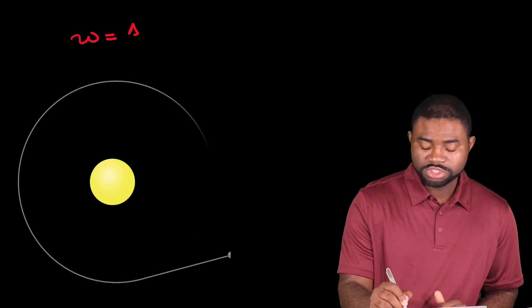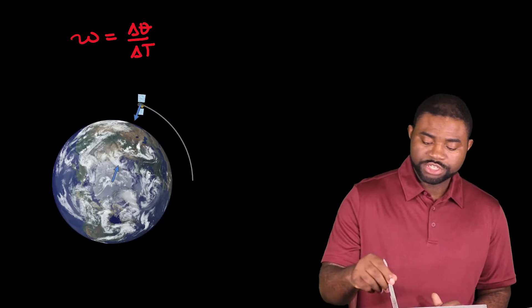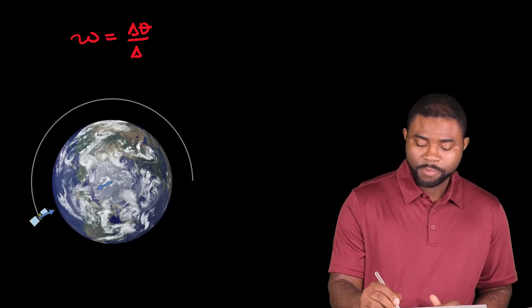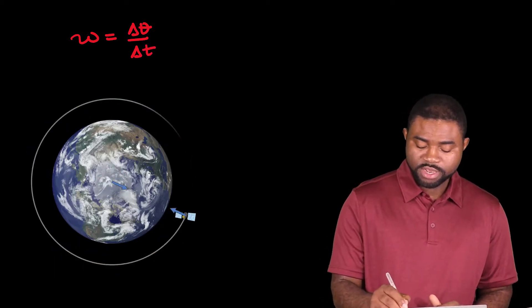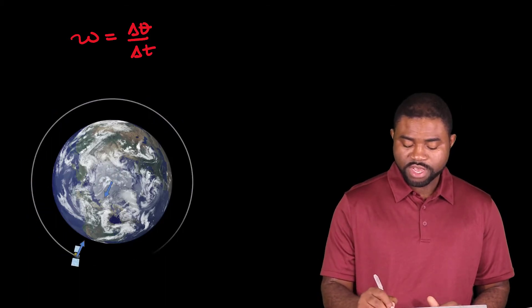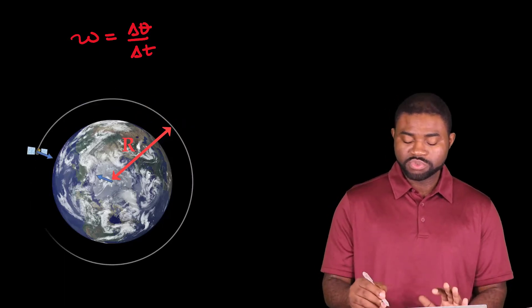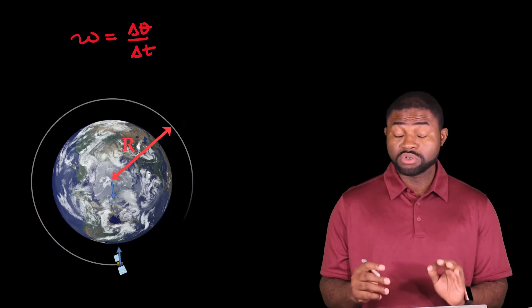Keep in mind, Omega is equal to change in theta divided by change in t. So if we have a circle of radius r, the time it takes for the object to go around the circle once is called the period.